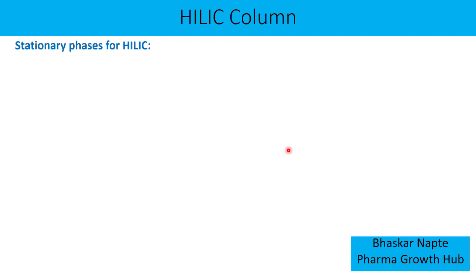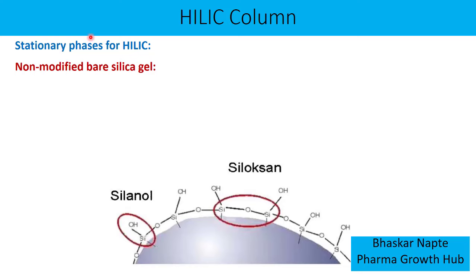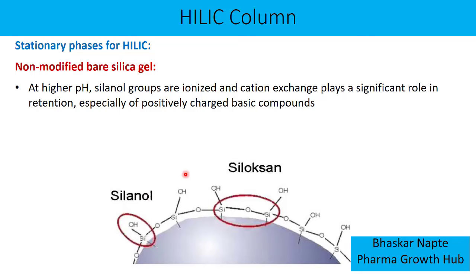The first stationary phase example is non-modified bare silica. This stationary phase has silanol groups as the active site. At higher pH, the silanol groups become ionized, developing a negative charge, and can interact with positively charged basic compounds through cation exchange.